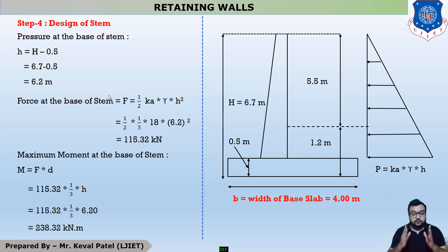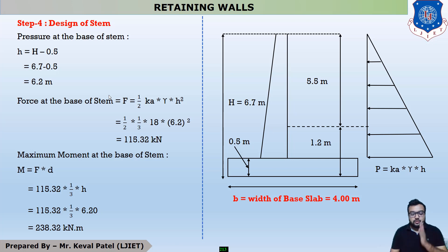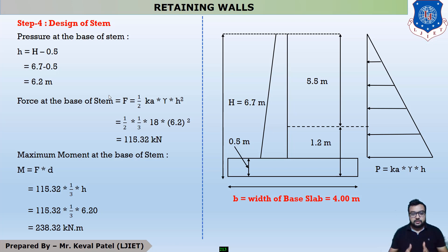In the first four lectures of this example, let us revise. In the first and second lectures, we discussed the coefficient of earth pressure, which is Ka and Kp — Ka means coefficient of active earth pressure and Kp is the coefficient of passive earth pressure. After that, we found out the preliminary dimensions using a trial and error method.